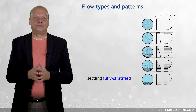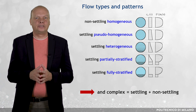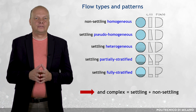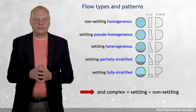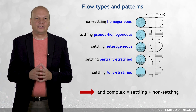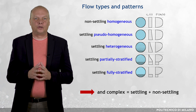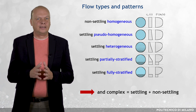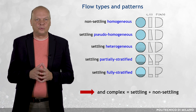Complex slurry flow carries coarse particles in a non-Newtonian carrier fluid, which itself is a mixture of fluid, usually water, and very fine particles. An identification of the flow types and patterns is essential for modeling of slurry flows in a pump pipeline transport system.